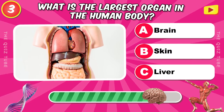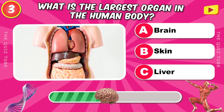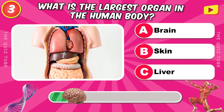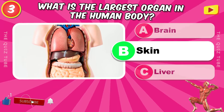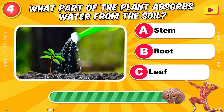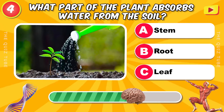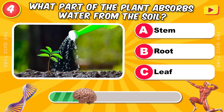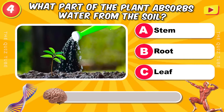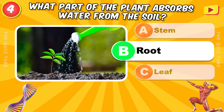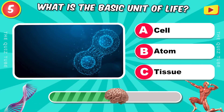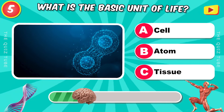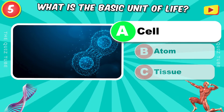What is the largest organ in the human body? The skin. What part of the plant absorbs water from the soil? The root. What is the basic unit of life? The cell.